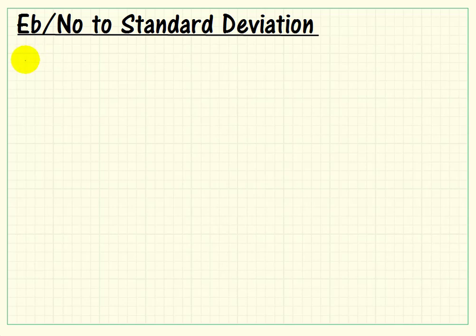Let's talk about how the signal-to-noise ratio per bit is converted to the standard deviation for a Gaussian random number generator.